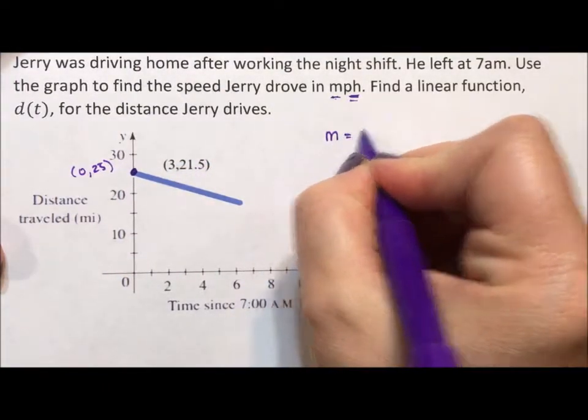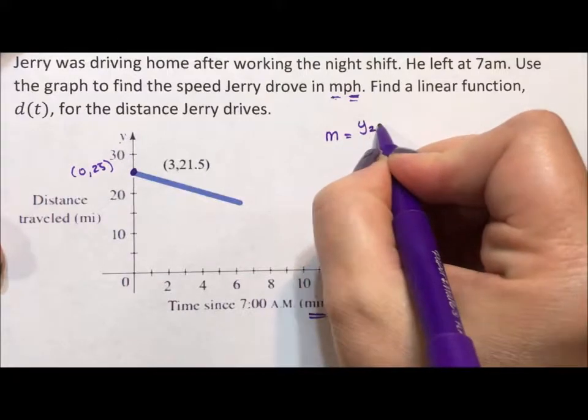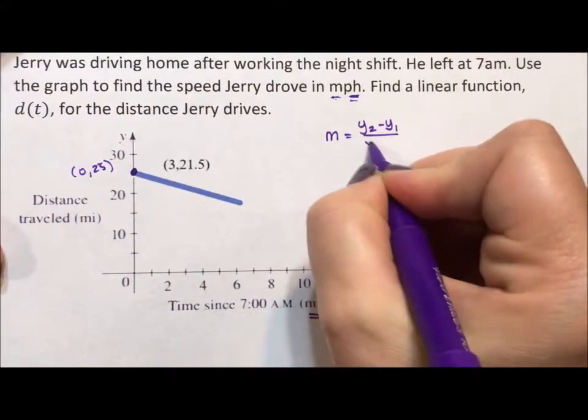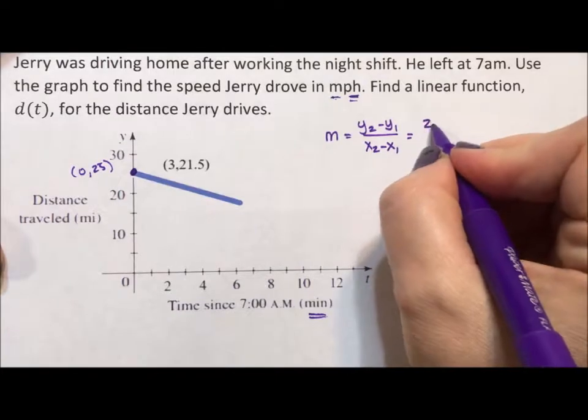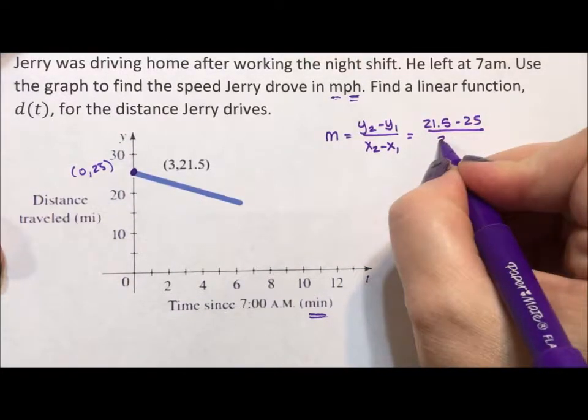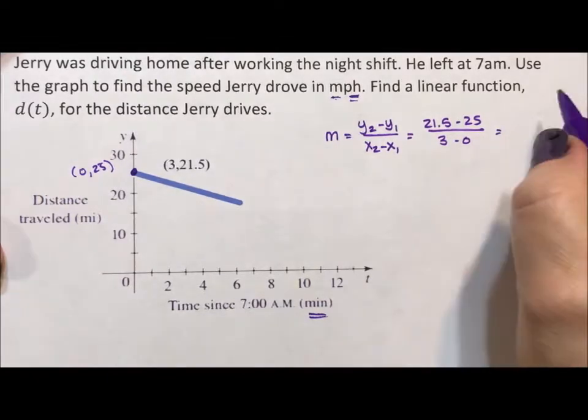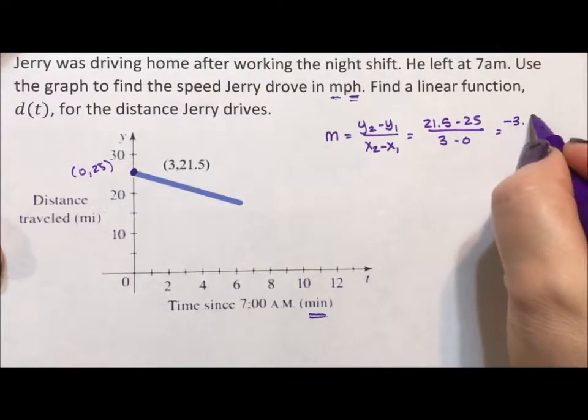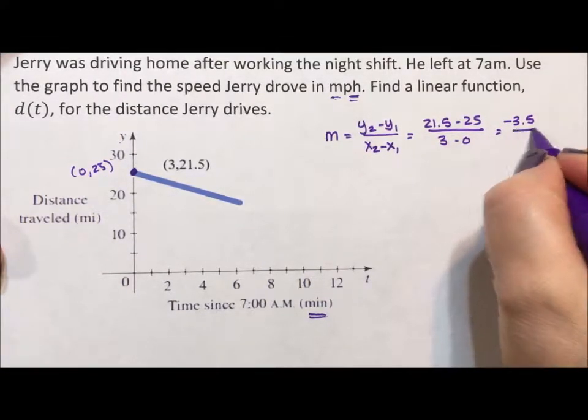So slope is y sub 2 minus y sub 1 over x sub 2 minus x sub 1, which is going to be 21.5 minus 25 over 3 minus 0, which is going to be negative 3.5 over 3.